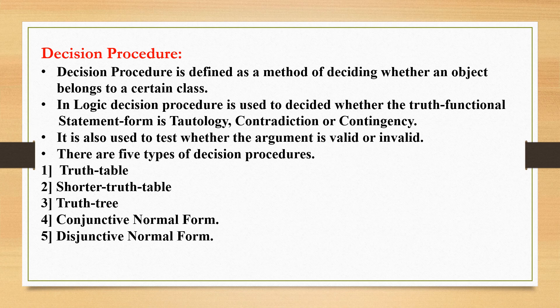There are five types of decision procedures. First is the truth table. Second is the shorter truth table. Third is the truth tree. Fourth is conjunctive normal form. And fifth is disjunctive normal form.